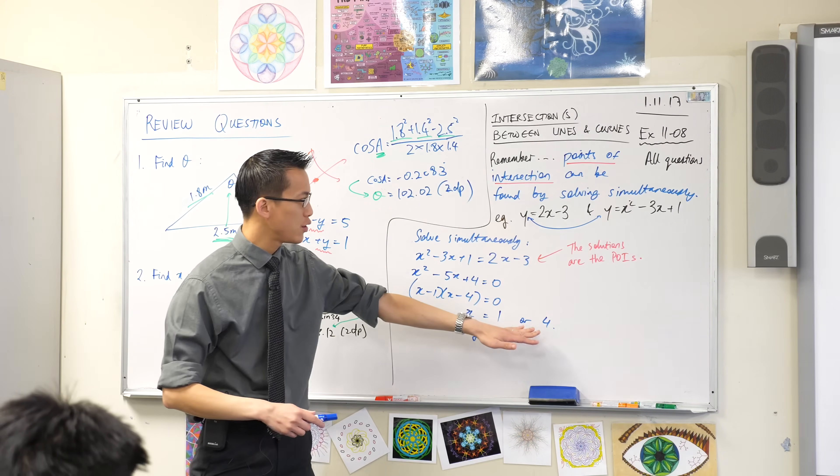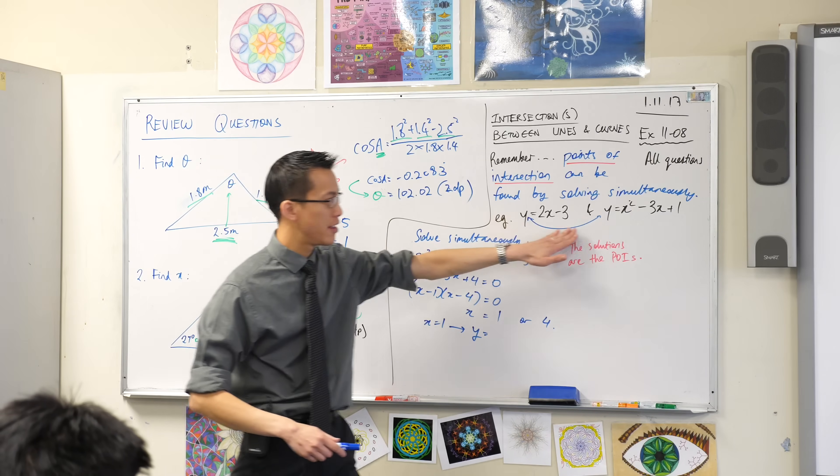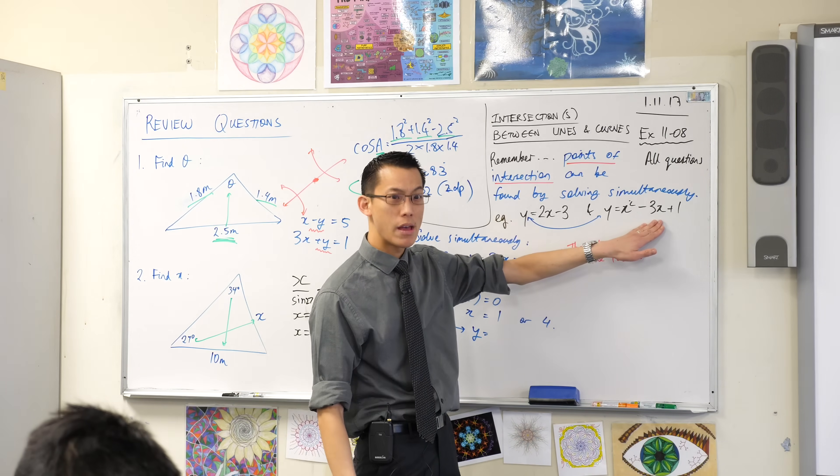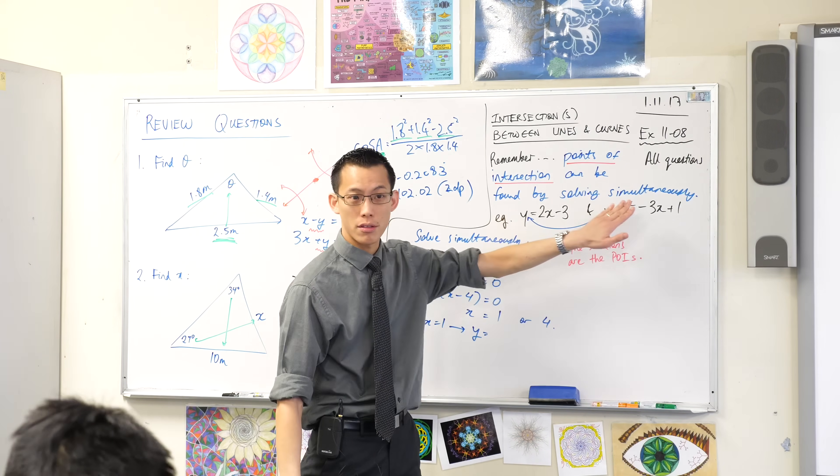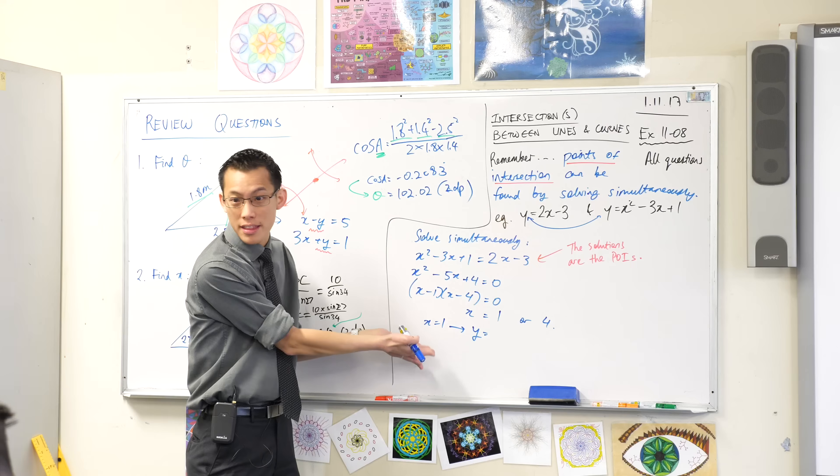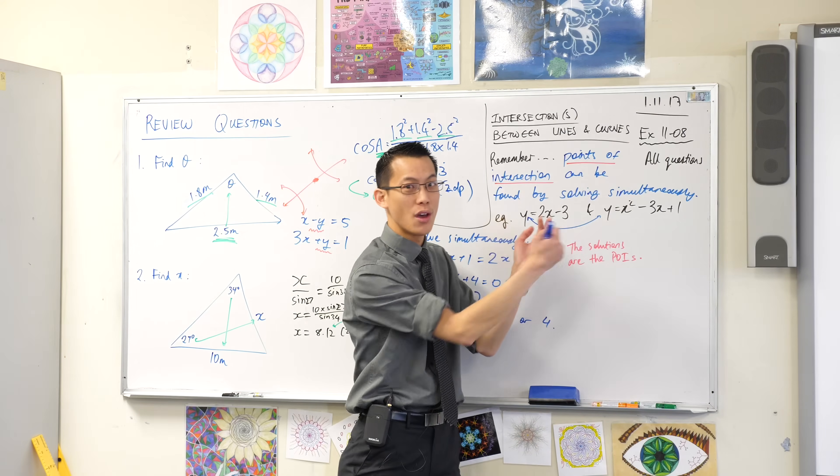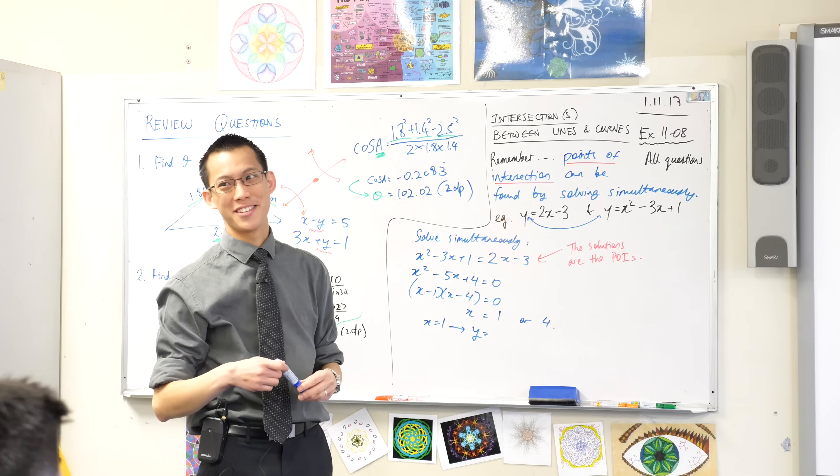If what I've found are the points of intersection, then these values lie on the straight line and the... what shape is that again? That's a parabola. So it should be on both. So I should be able to take this number, this x value, and put it into either of these equations. Which do you think is a better choice?